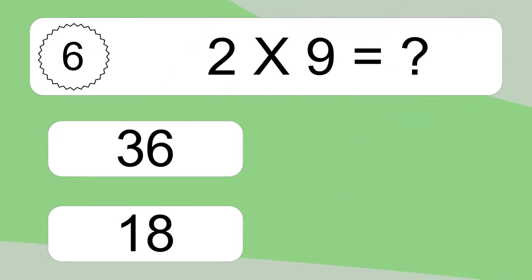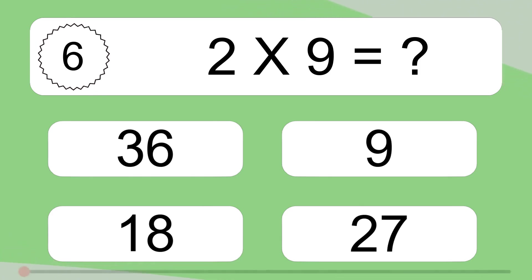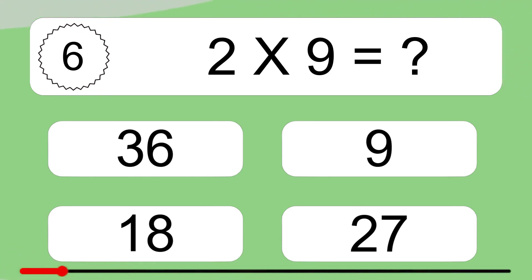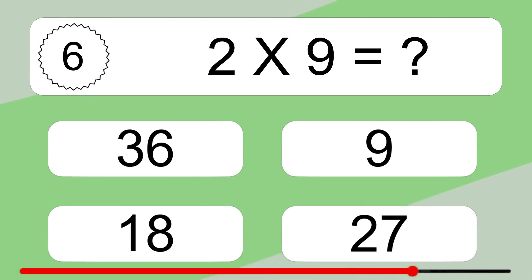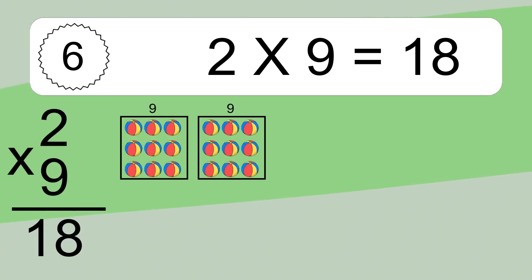Two times nine equals what? Two times nine equals eighteen.